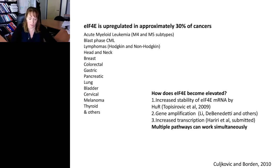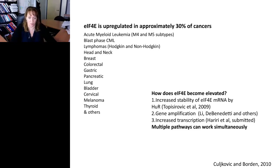How EIF4E becomes elevated in these malignancies is obviously incredibly important. We have a couple of models: increased stability of the 4E transcript by another oncogene, HUR; gene amplification of EIF4E; and increased RNA levels through increased transcription. I should note that some of these can actually act together, so multiple pathways can work simultaneously.